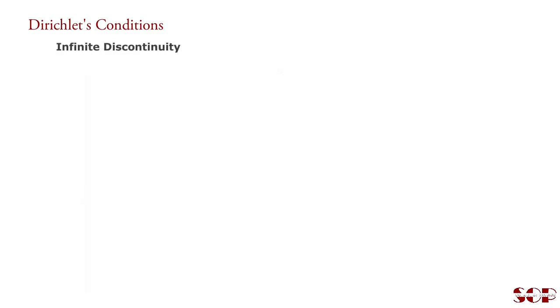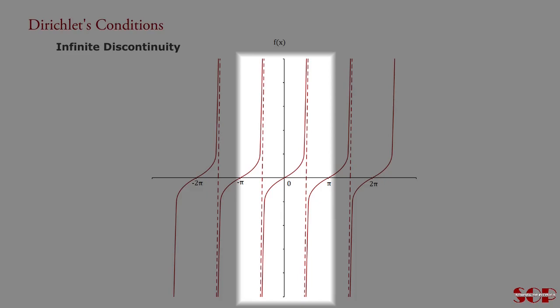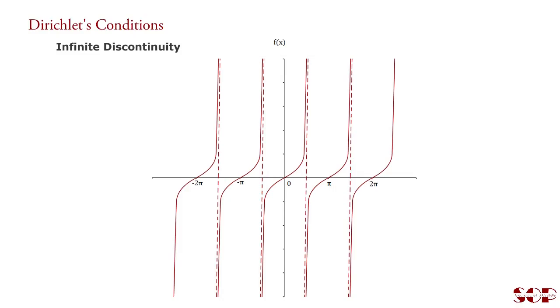Infinite discontinuities. Consider a function of this type. It has also two discontinuities per period, but the magnitude of discontinuity is infinite. Consider interval -π to π, where at point x = π/2 and -π/2 the function tends to plus minus infinity. It means the function has a finite number of infinite discontinuities.